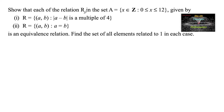We need to show that each of the relations R in the set A = {x ∈ Z : 0 ≤ x ≤ 12} is an equivalence relation. The first relation R₁ = {(a, b) : |a - b| is a multiple of 4} and the second R₂ = {(a, b) : a = b}. We also need to find the set of all elements related to 1 in each case.